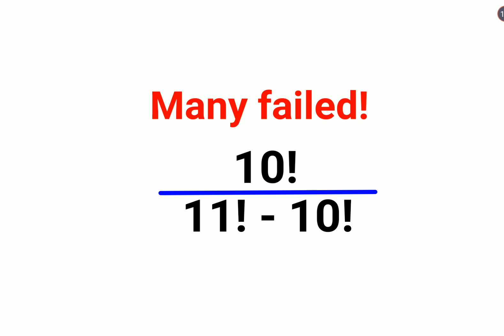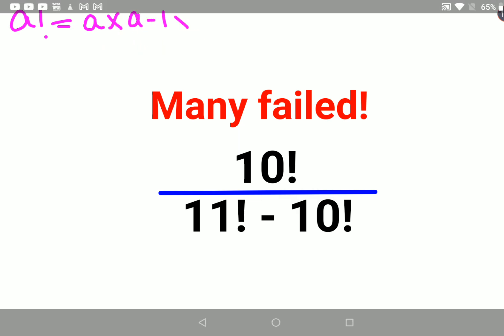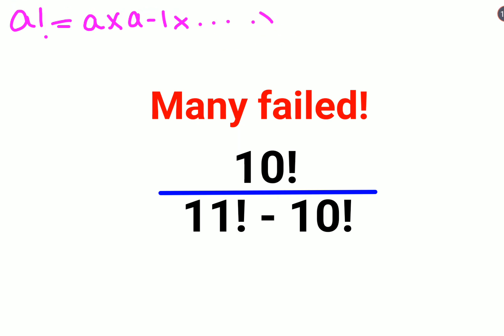First, very important thing is that whenever you have a factorial ahead or rather an exclamation sign ahead of a number, you can represent it mathematically by multiplying that number with the next consecutive number but in the decreasing order until and unless you reach the value of 1.